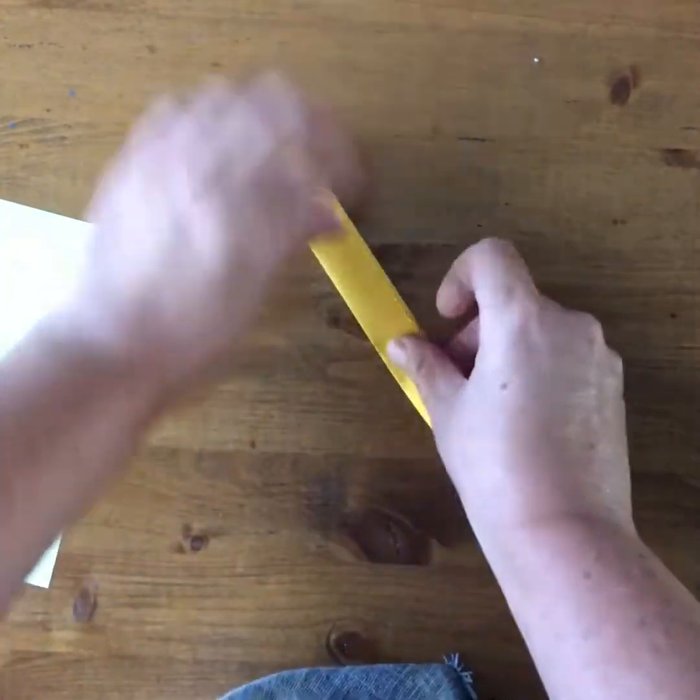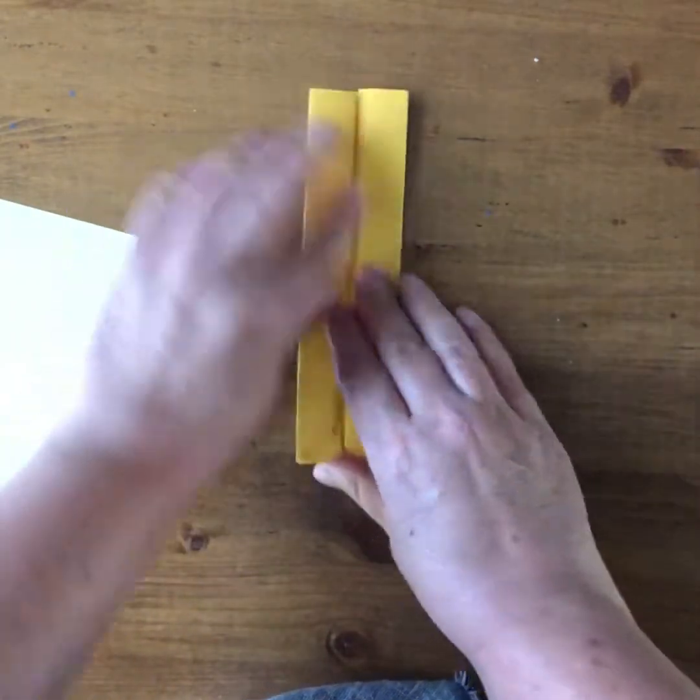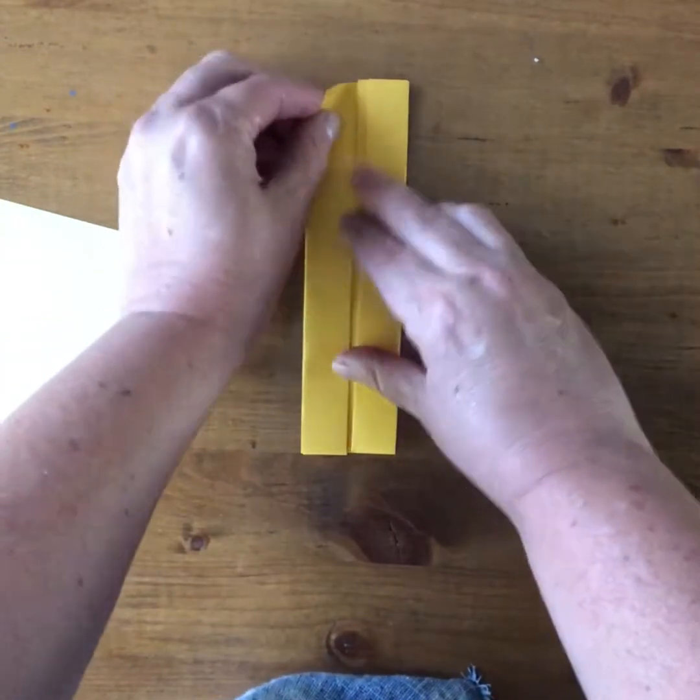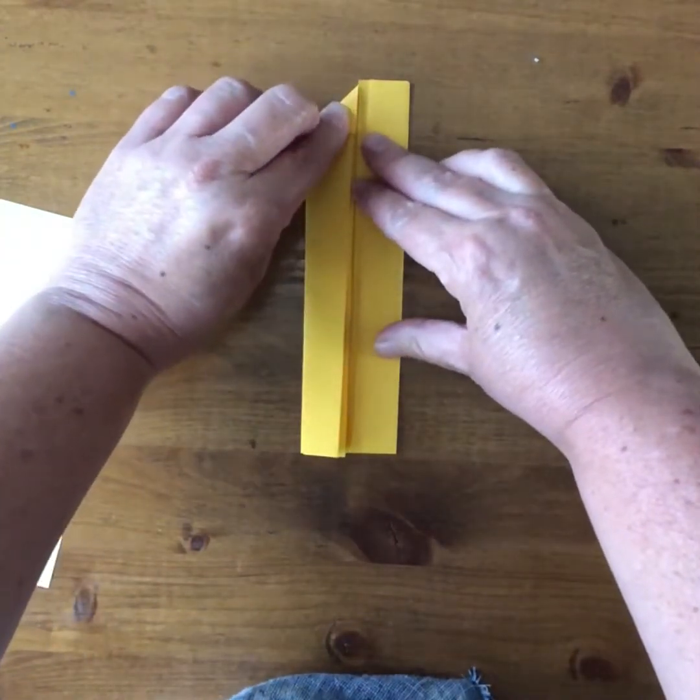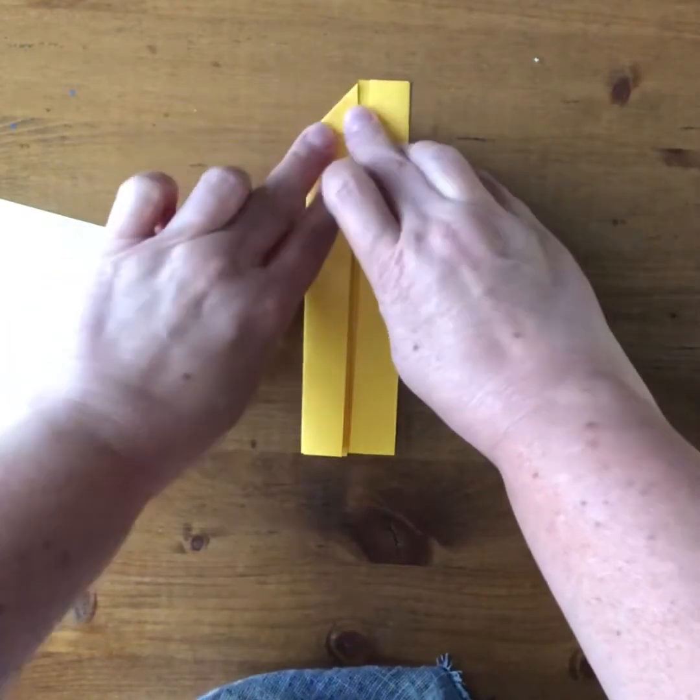And then you fold them together like this as well and then position it up and down and start with this line of symmetry here.